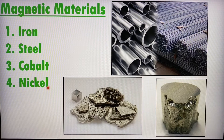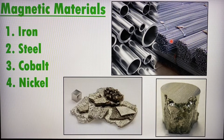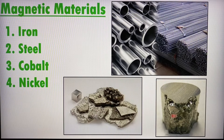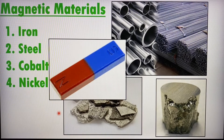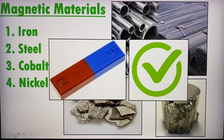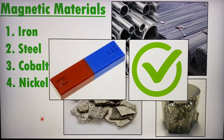If you want to really focus, you can just focus on iron or steel. Over here I have a picture of iron or steel bars or rods. This is actually how cobalt looks like, and this is how nickel looks like. Now, if you bring a magnet close to a magnetic material or magnetic metal, they will be attracted to the magnet. This is how you can test if an object or material is magnetic.